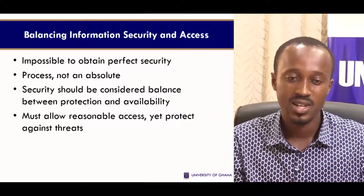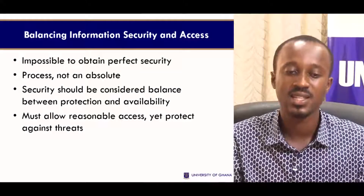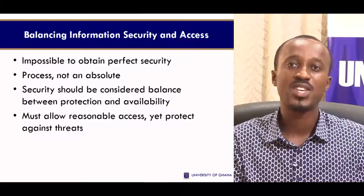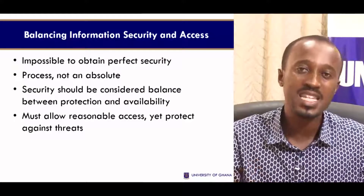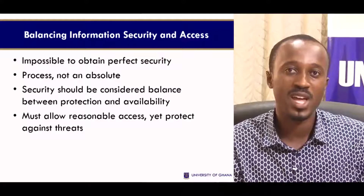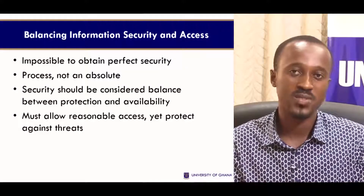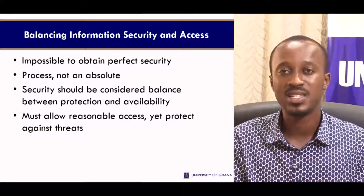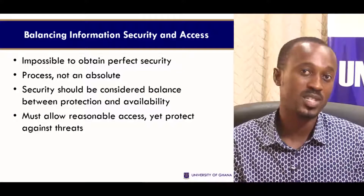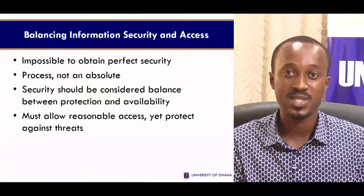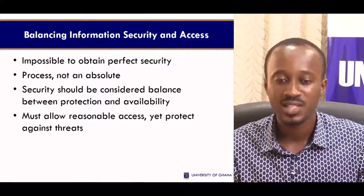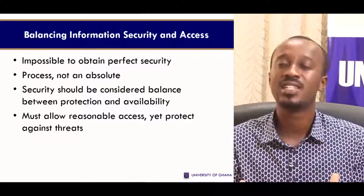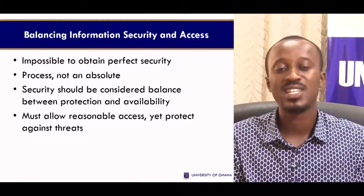Security can be breached, and it is a process. When balancing information security and its assets, security should be considered the balance between protection and availability. To say something is secure means that when an authorized person needs to access that information, it is made available to them and no one else. You can encrypt many things, but make sure that when the right authorized person needs access, they can access and use it for their business. That is how you balance information protection and availability. You must also allow reasonable access to authorized persons while protecting against threats.